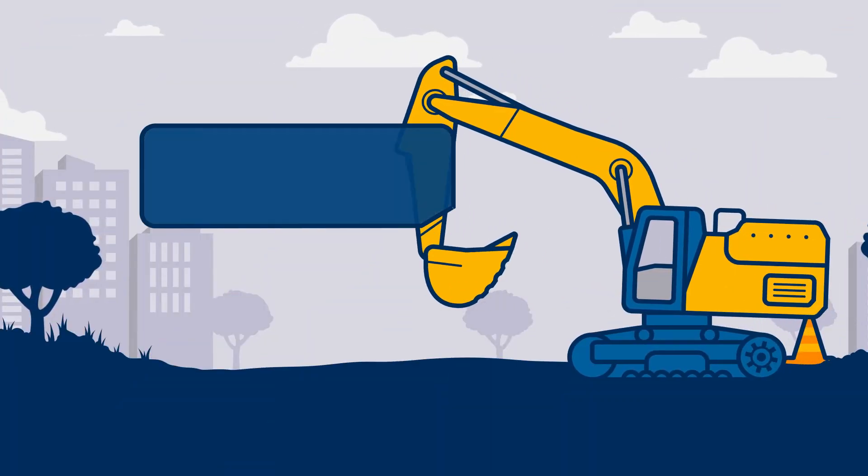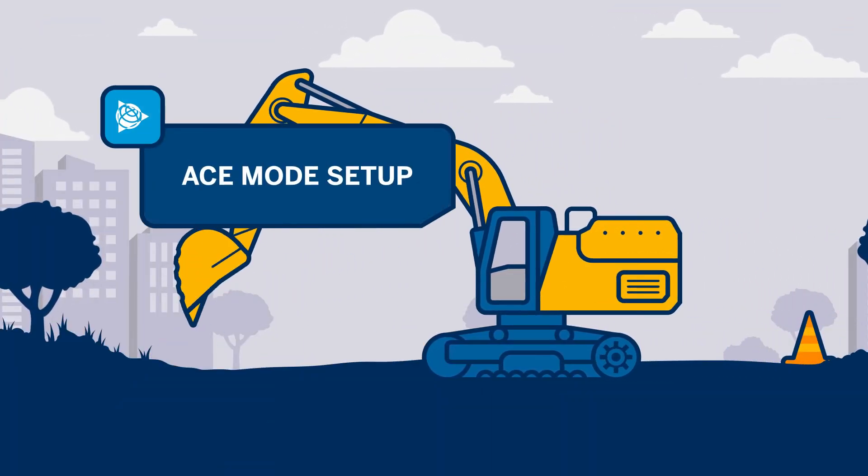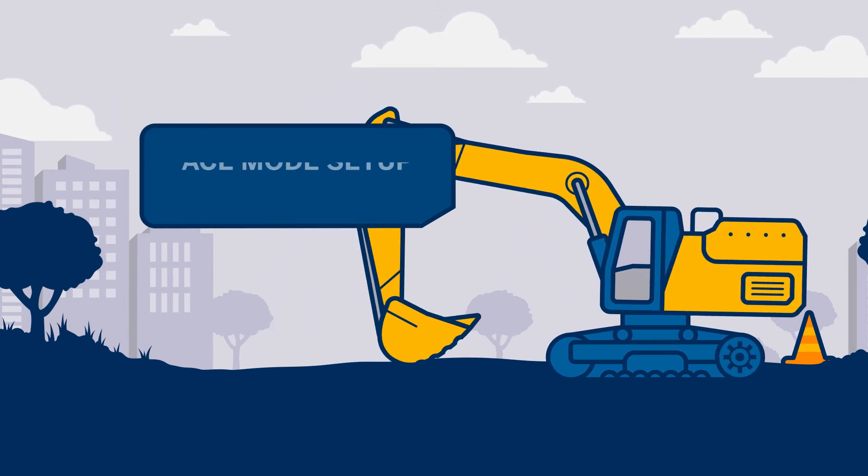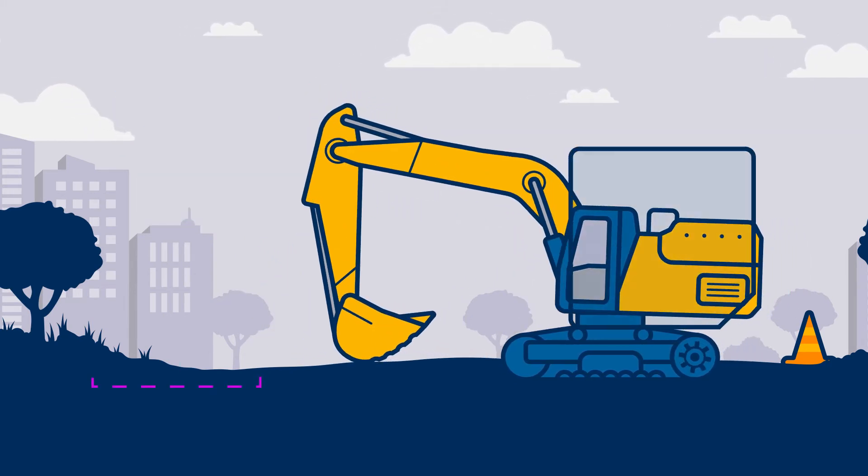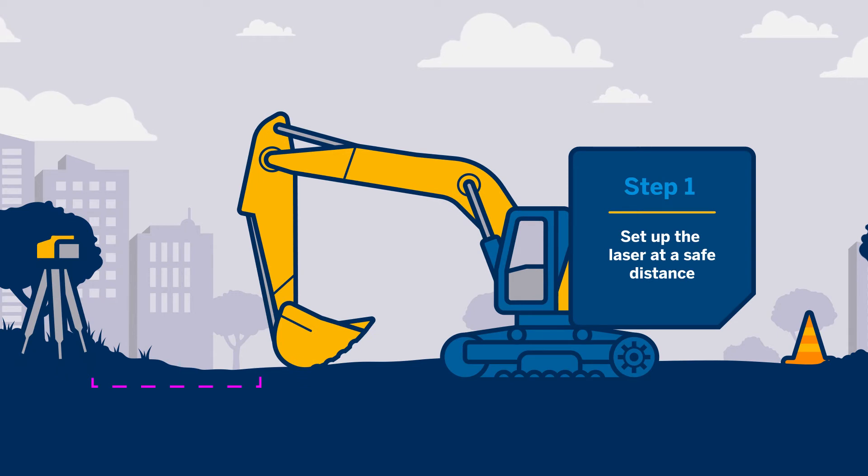To set the ACE Mode for the LR60, follow these steps. Set up the laser in an appropriate location for safety and efficient machine operation. Turn the laser on.